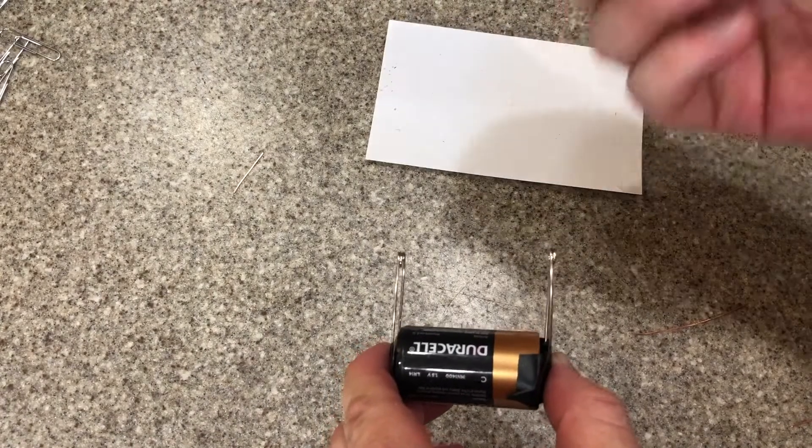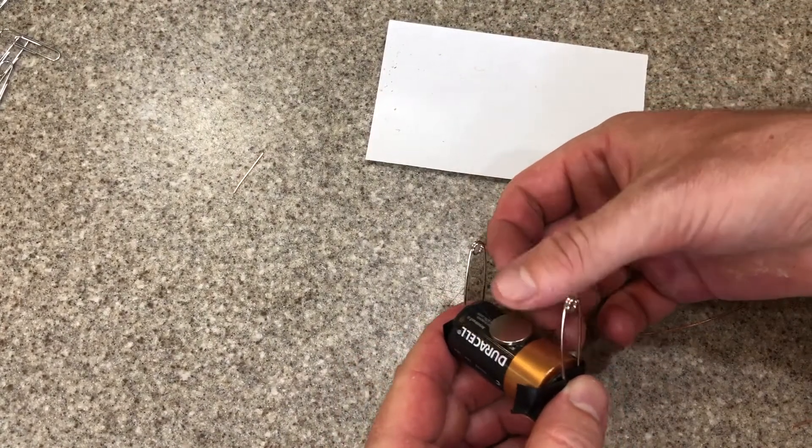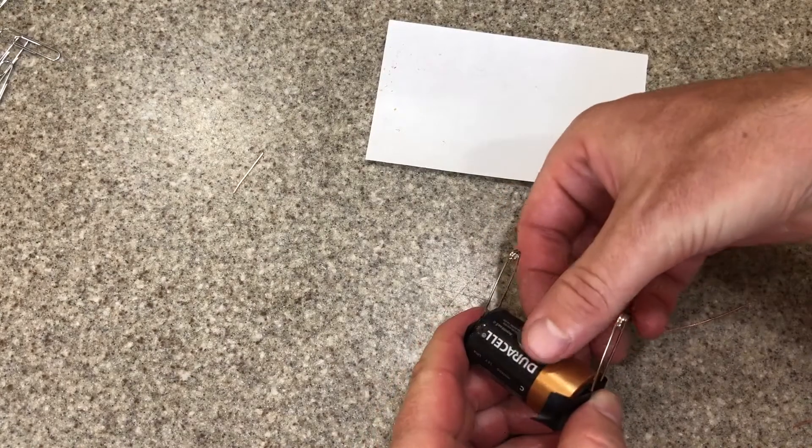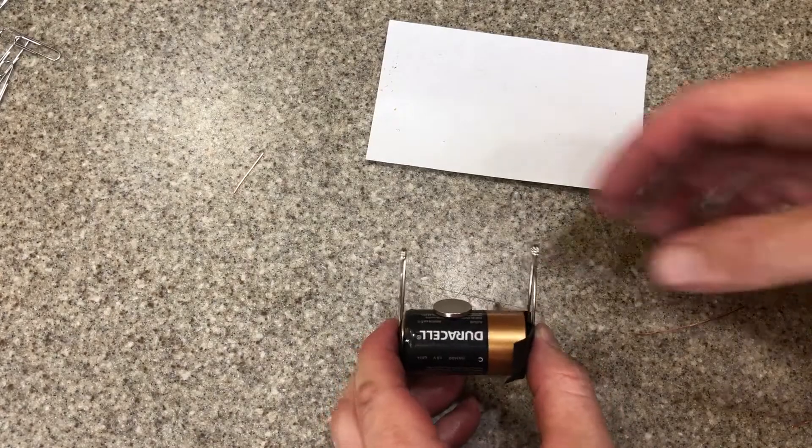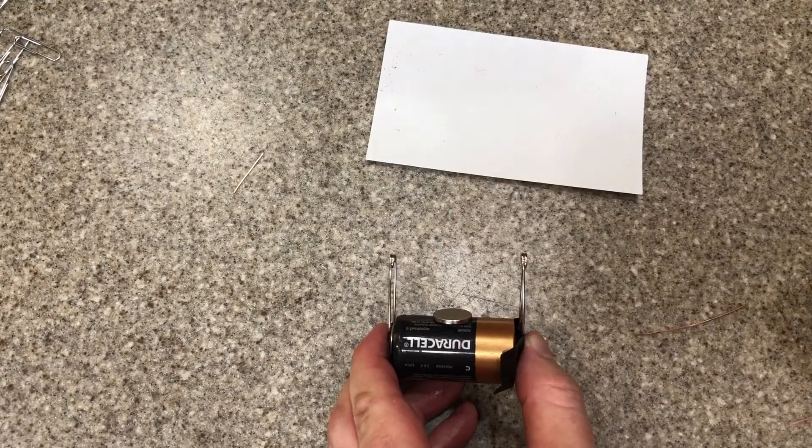Next step is to take your magnet and put it on top of the battery. Because the battery itself will attach to a magnet, you should feel it click into place there. Just right on top. About in the middle is fine.